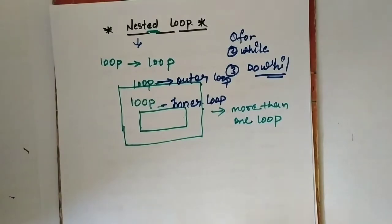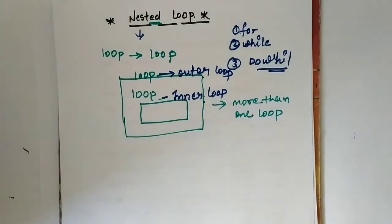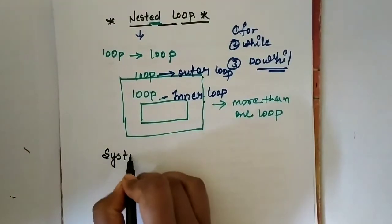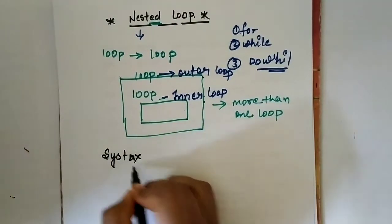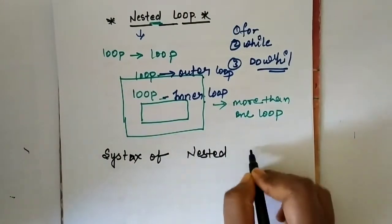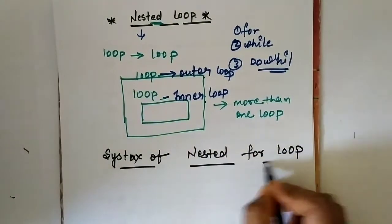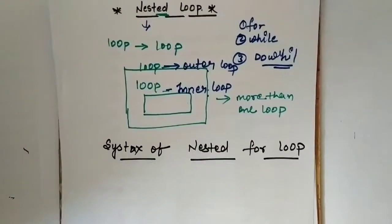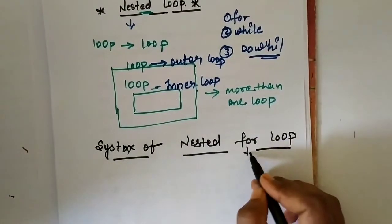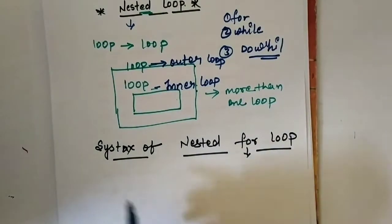So let's see the nested for loop and discuss its syntax. First we will see the syntax of a single for loop, and after that we will discuss the nested for loop syntax.